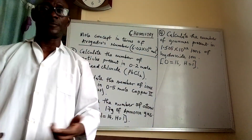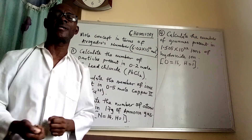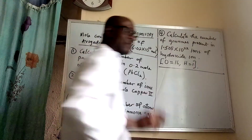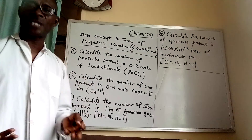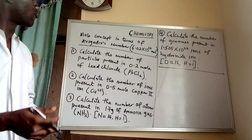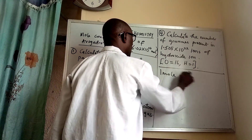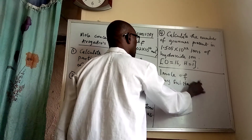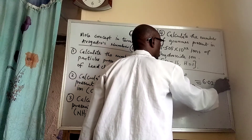Avogadro's number is a constant which is given as 6.02 times 10 to the power 23 per mole. What does this mean? It means that one mole of any substance — be it a compound, be it an atom, be it an element, anything — one mole is always equivalent to 6.02 times 10 to the power 23.